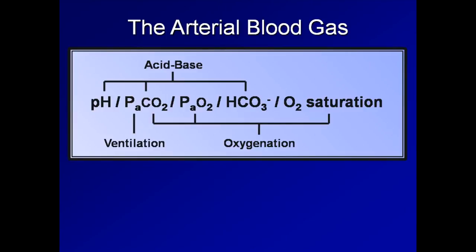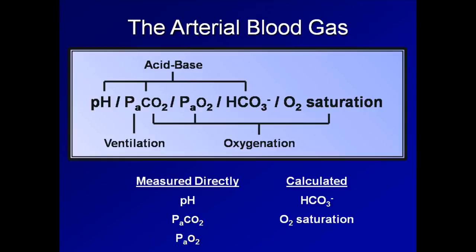One last point about these values from the ABG concerns how they are determined by the machine. The big three — that is, the pH, the PaCO2, and the PaO2 — are all measured directly. The bicarb is calculated using the Henderson-Hasselbalch equation, and the O2 sat is calculated using a complicated nomogram relating PaO2 and temperature. So overall, while the ABG basically contains just five values, it provides critical information about a patient's gas exchange and systemic metabolic pathways. It is an essential tool for diagnosing and prognosticating an extremely wide variety of pathologic conditions.